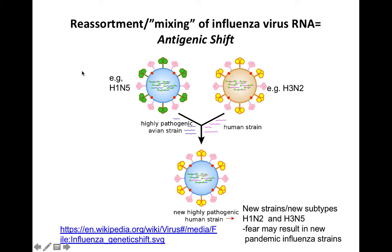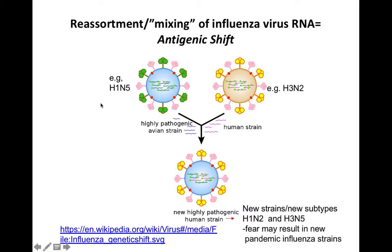If we look at two different influenza type A viruses — say, one subtype H5N1 and a second subtype H3N2 — some hosts can get co-infected with two different influenza subtypes, and a single host cell can get co-infected with both. We think this happens often in pigs. Pigs have their own swine influenza strains, and they can also be co-infected with avian or bird influenza strains.